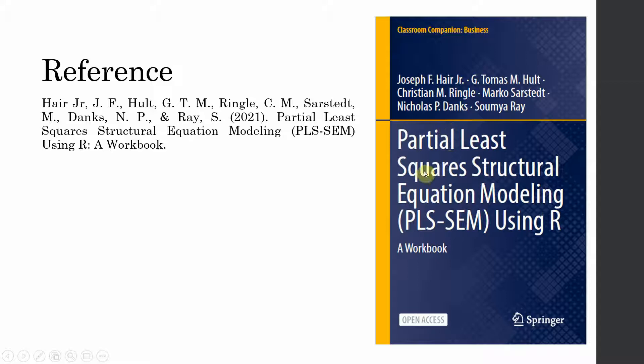This is a very good book which will be used throughout this series. The book is written by Thomas Halt, Christian Ringel, Marco Saarstedt, Nicholas Stanks, and Soumya Rae. I would especially like to thank Professor Rae for answering my queries and being in touch during this whole series. Hopefully he will join us in one of the lectures later in the series as well. If you want to read about Partial Least Squares Structural Equation Modeling in R, this is a free resource easily downloadable from the Springer website — it is an open access book. I strongly recommend reading it.